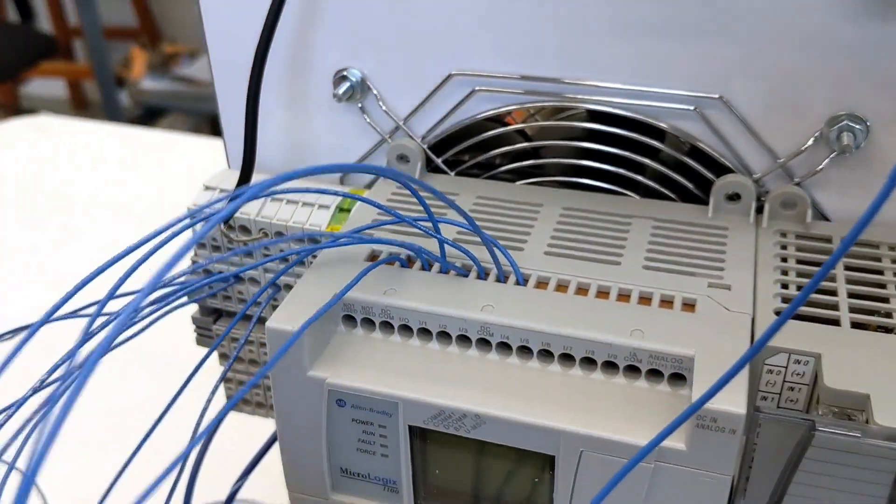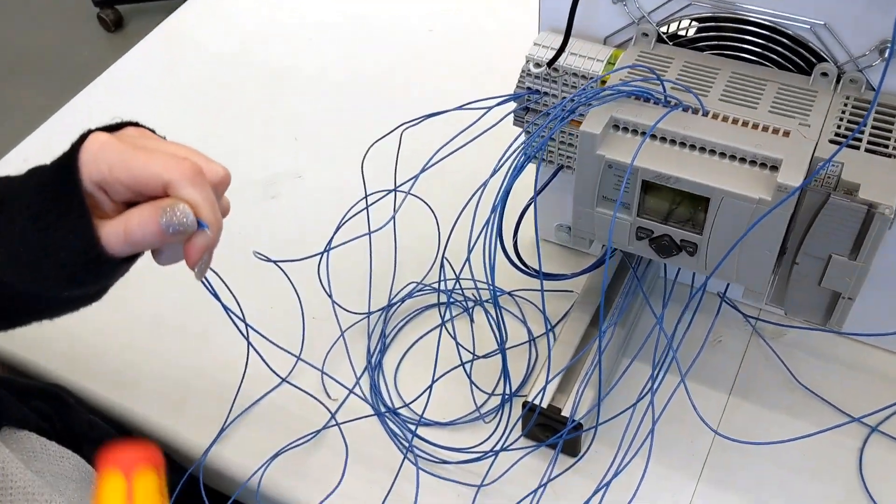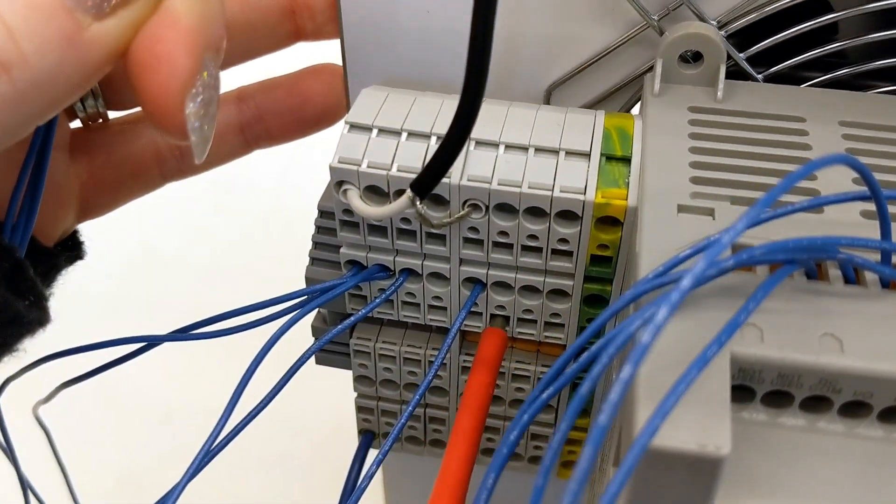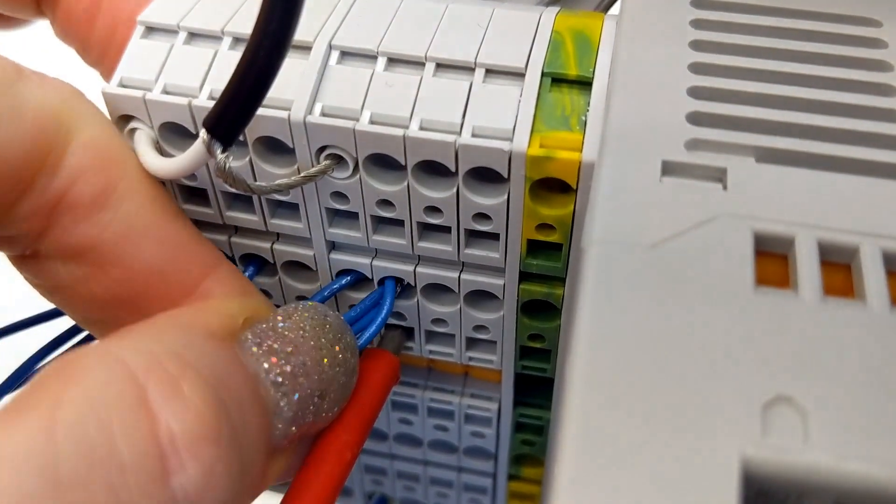Next, grab the DC24V minus terminal wire from the bottom of the PLC and the two DCcom wires from the top of the PLC and connect them to the minus 24 volt terminal block.